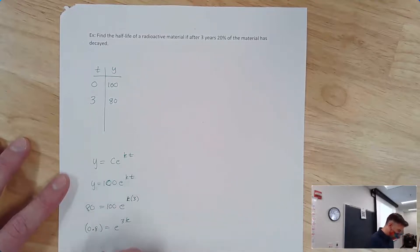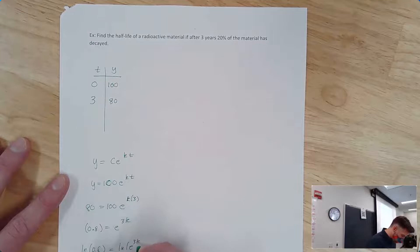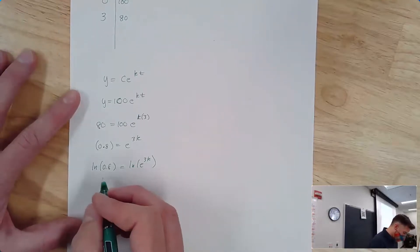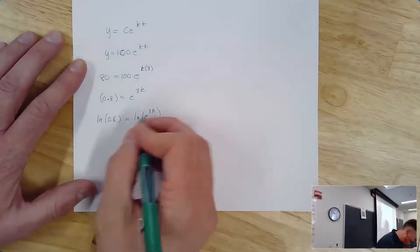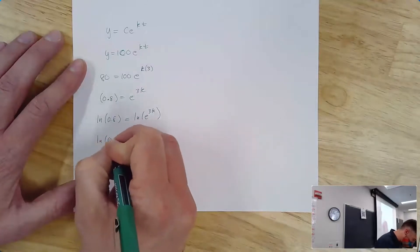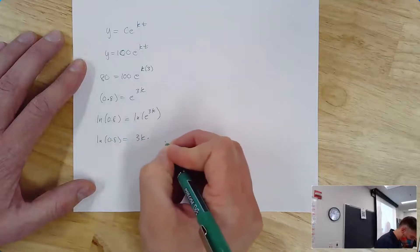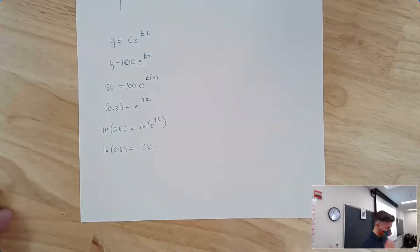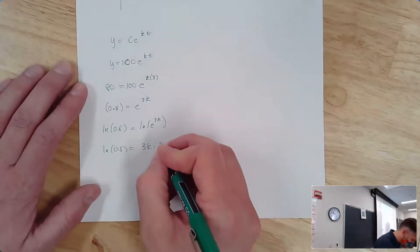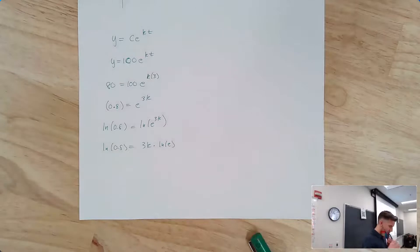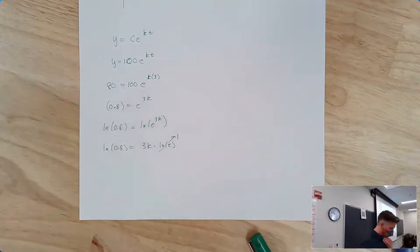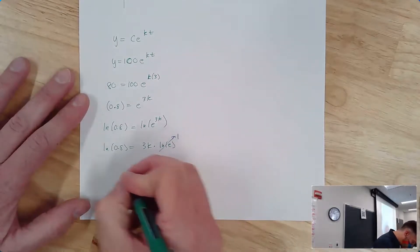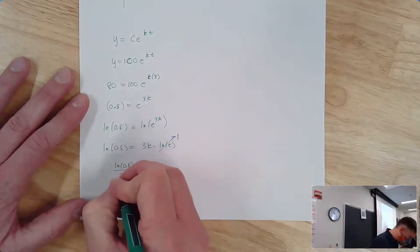Using y = 100·e^(kt): plug in 80 for y and 3 for t. Divide by 100 to get 0.8 = e^(3k). Take the natural log: ln(0.8) = 3k, so K = ln(0.8)/3. The long-form model is y = 100·e^((ln(0.8)/3)·t).